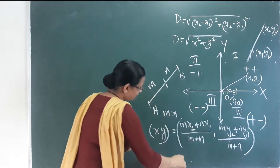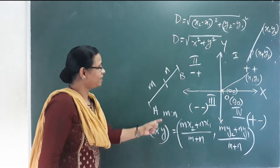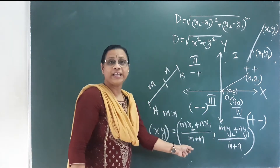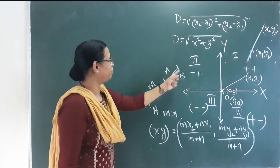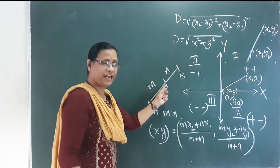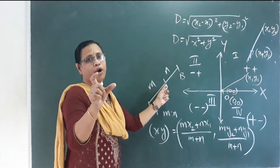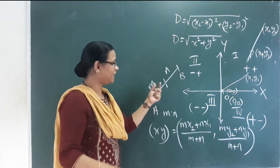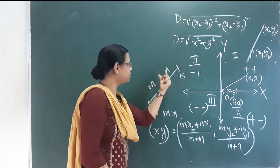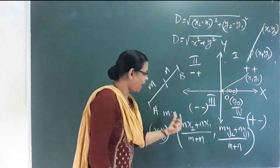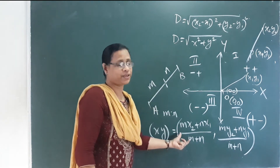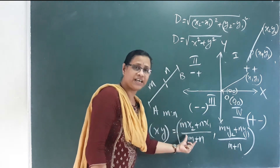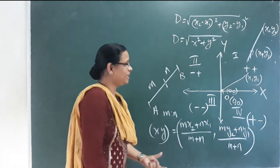This point is the internal division. That is, given points A and B, we find a point that divides AB internally. If we know the ratio M to N, we can find that point — this is the internal division.